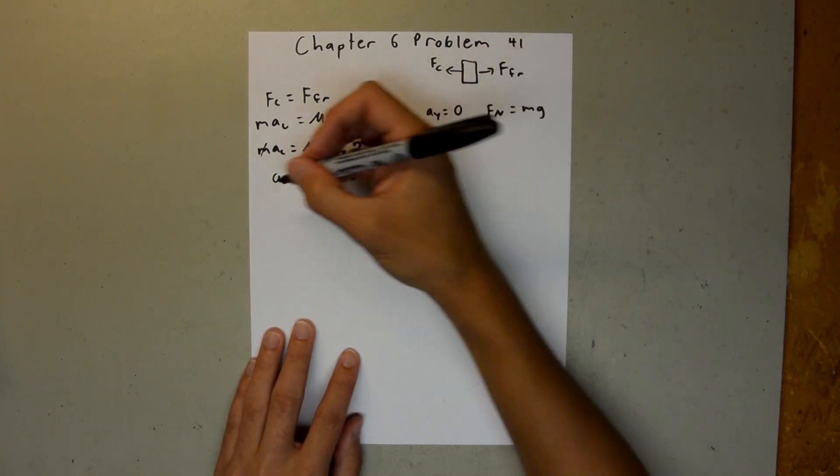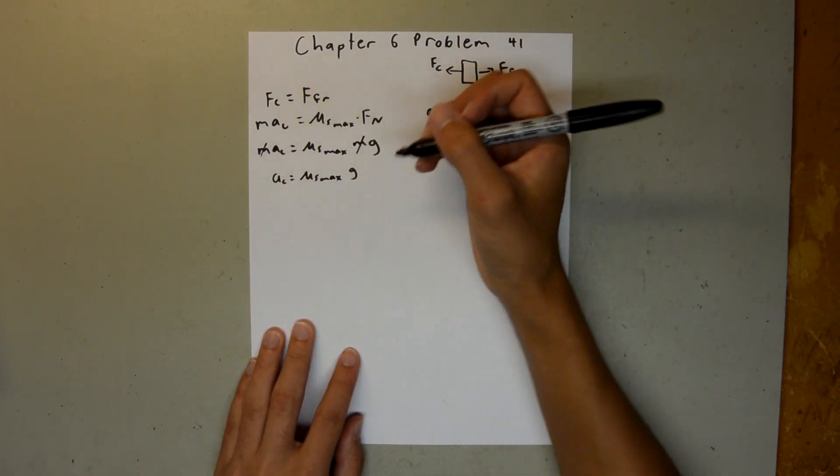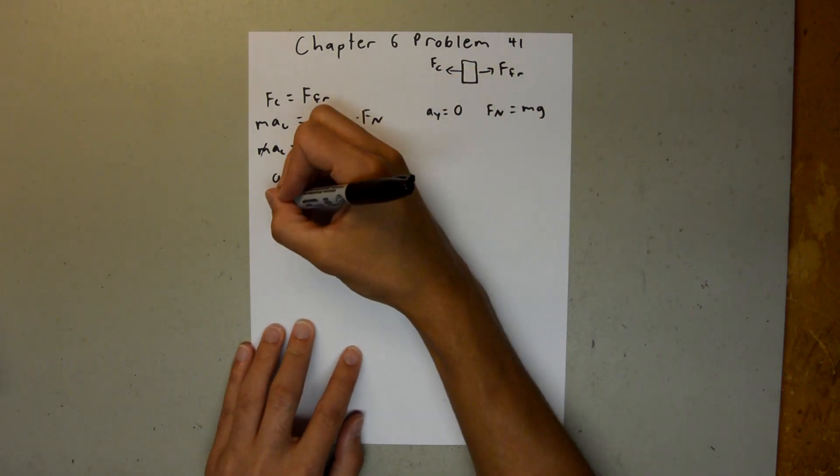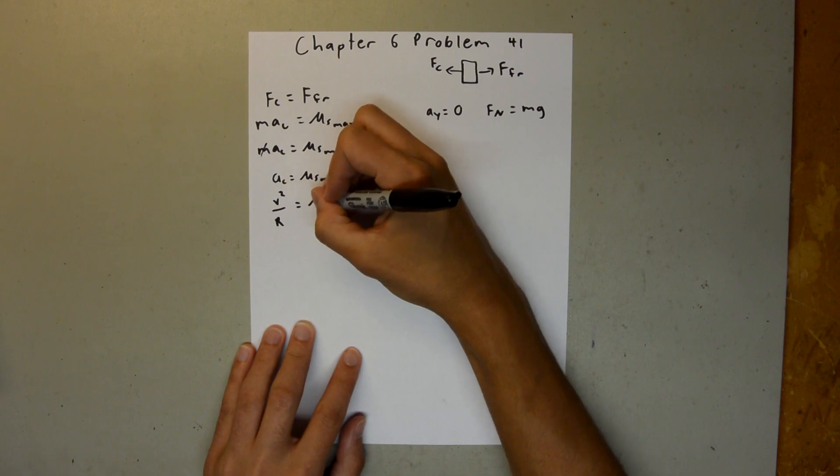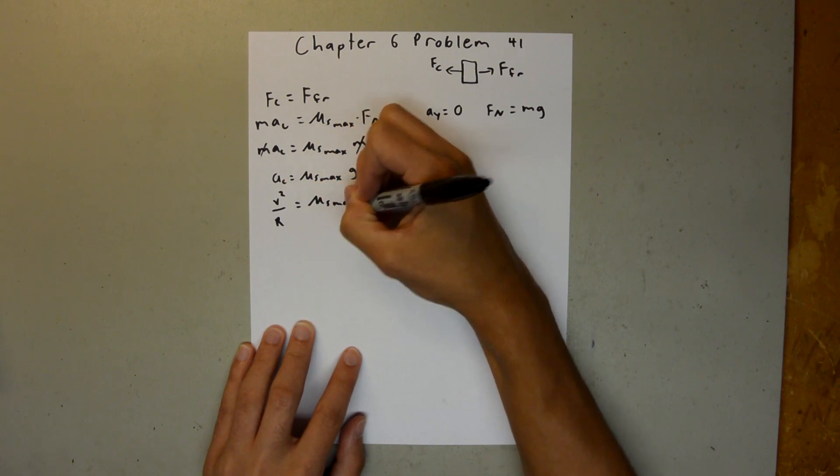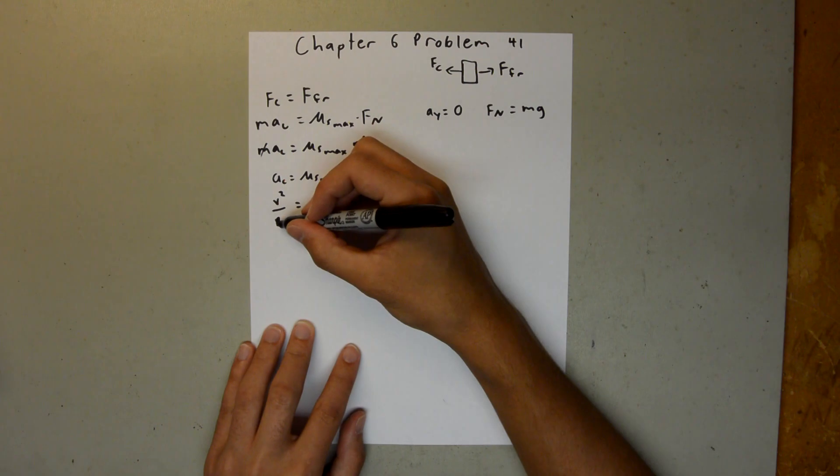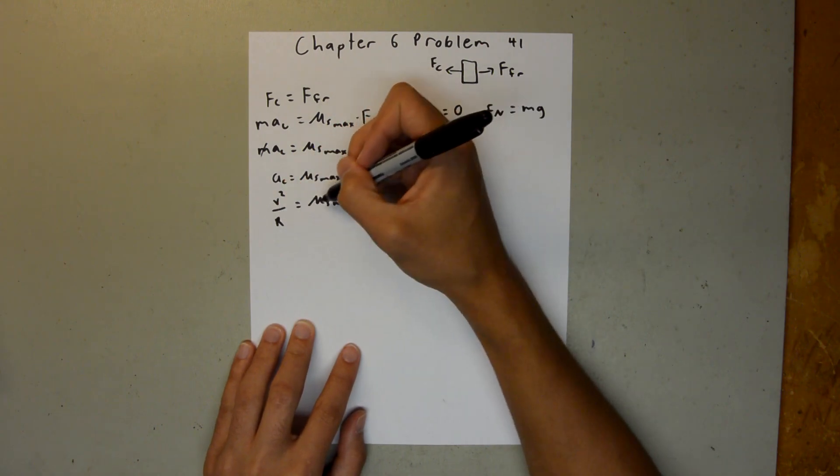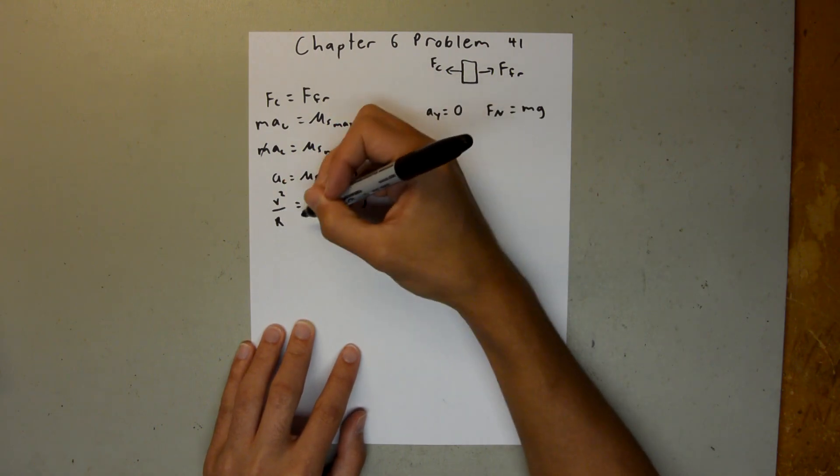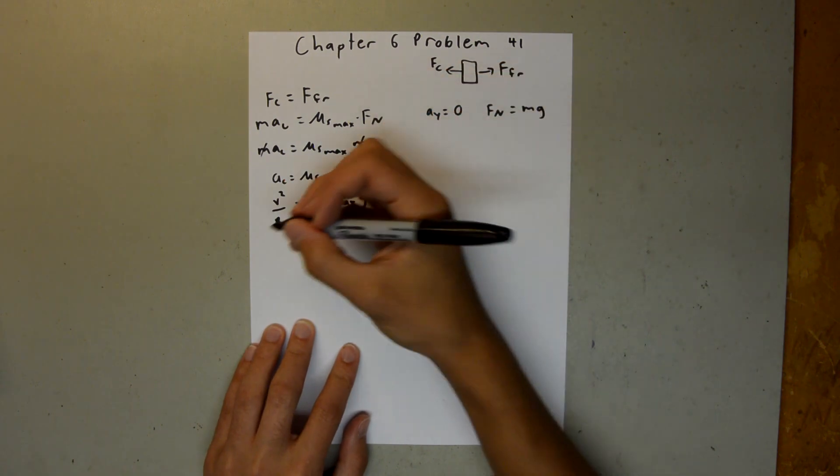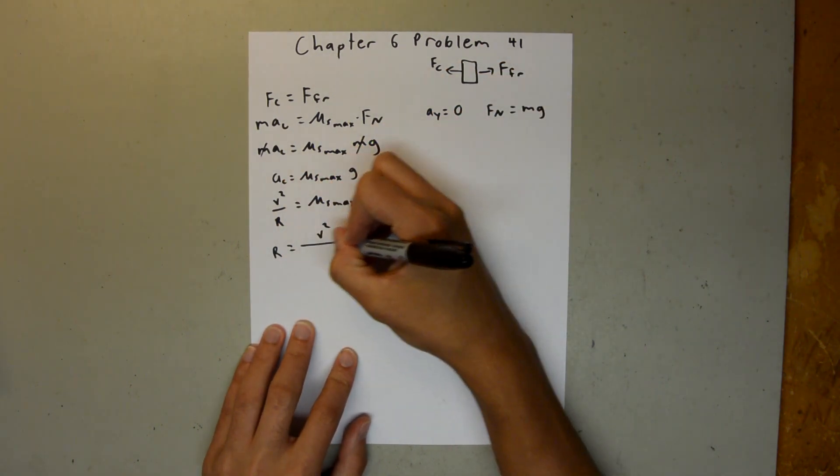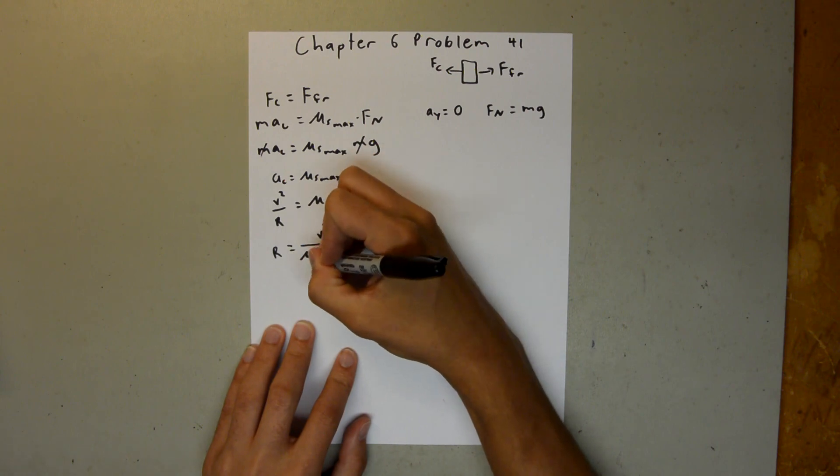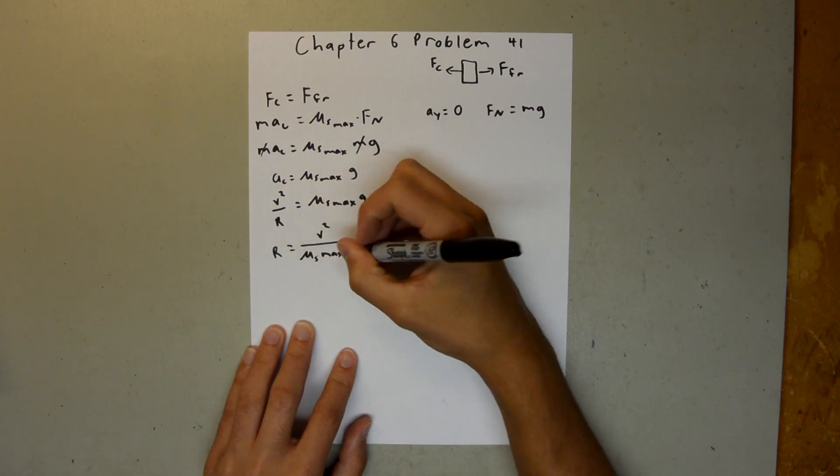And we can expand this further, and we know that the centripetal acceleration is equal to the velocity squared over r. So we can say v squared over r is equal to mu_s_max times g. And since we're looking for r, we can rearrange this by multiplying both sides by r, and then dividing both sides by this entire term. And when we do that, we'll get r is equal to v squared divided by mu_s_max times g.